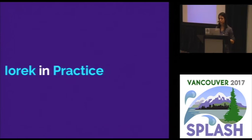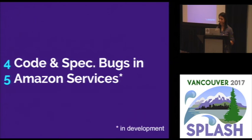So we used Yorick to find real bugs in services at Amazon. And this was successful. So we found four code and specification bugs in five different Amazon services. So one example of this is that one service took as input a colon delimited path. And with Yorick, we were able to find that this service crashed when you passed it a path that contained an underscore. And when we told the developers about this, they accepted this bug. And this is the sort of bug that can be really difficult for bounded exhaustive testing tools to find, because it's a very specific case.